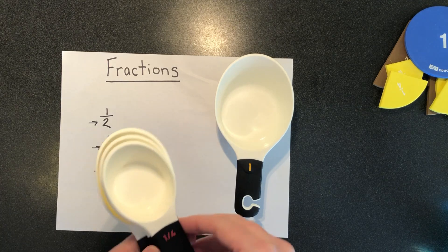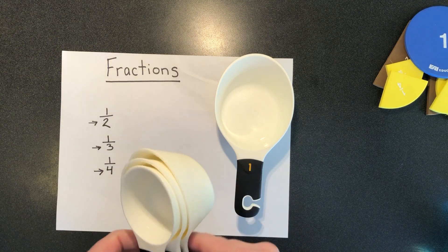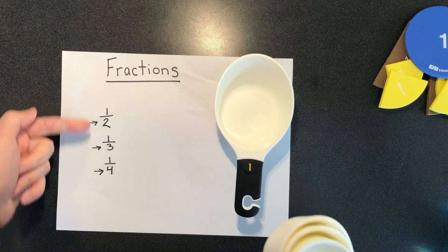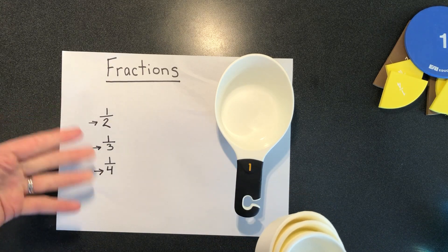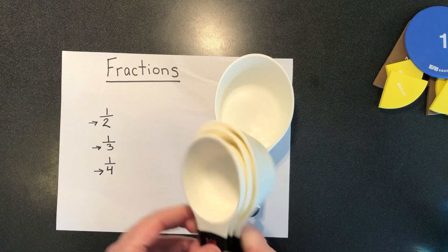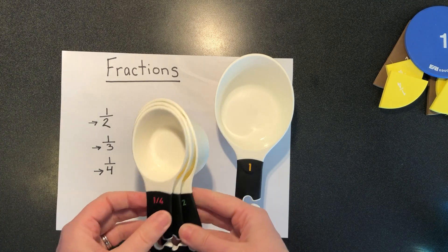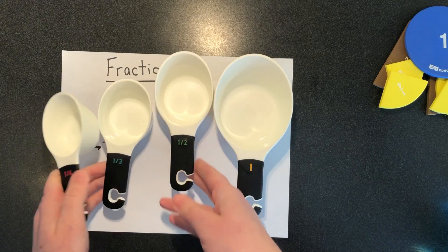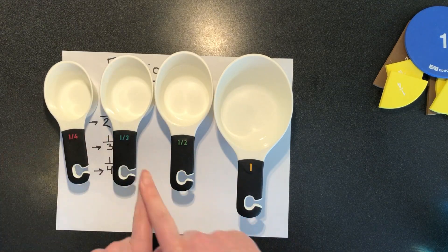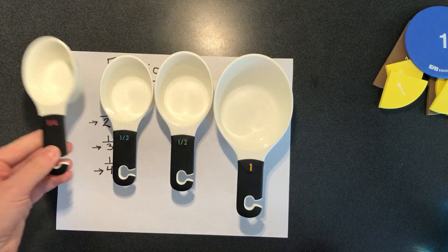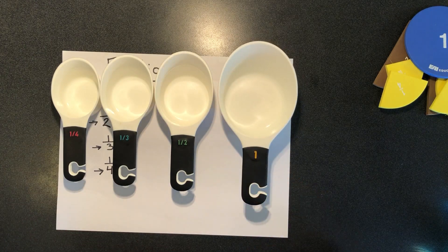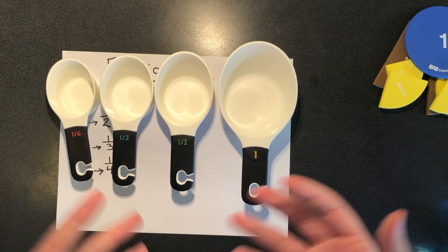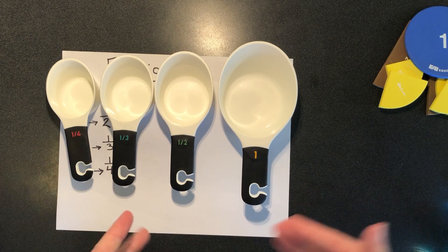So I have here my measuring cups. And one thing that's kind of fun to do as a way to help you to really understand what these digits mean and how to compare your fractions is to take out your measuring cups that are stackable like this and to look at them and put them in order. One fourth is the smallest. One cup is the biggest. So that can be kind of a fun thing to do to help you get to know the order of your fractions.